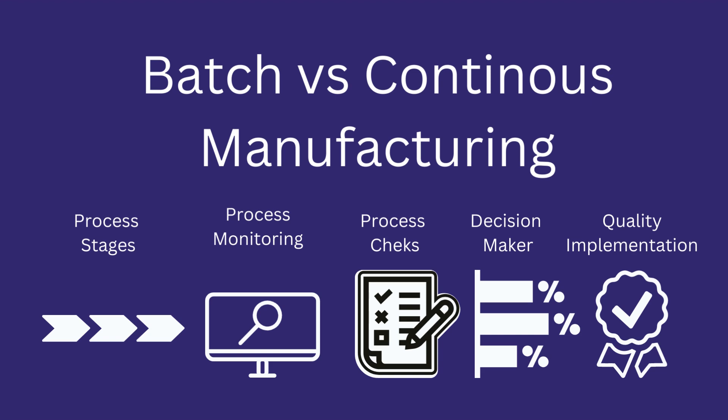In this video, we will talk about the difference between batch and continuous manufacturing in the pharmaceutical industry, and discuss how they differ from each other in terms of process stages, process monitoring, process checks, decision maker, and implementing quality.